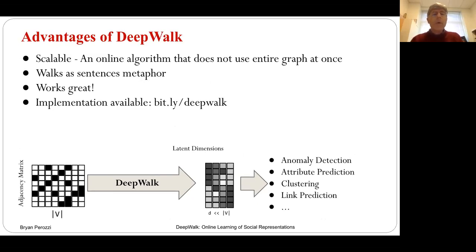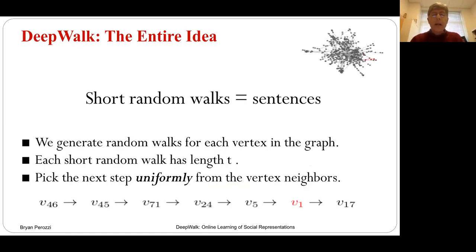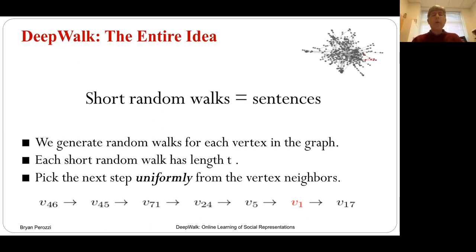Our DeepWalk technique is actually relatively scalable — you don't need the whole graph, and it's reasonably efficient. The idea is incredibly simple. If you think about a random walk in a graph, a random walk is a sequence of vertices. If you think of the vertices of a graph as a vocabulary and these random walk sequences as sentences, you can use all the machinery from word embeddings — just take these random walks and develop an embedding for each vertex.